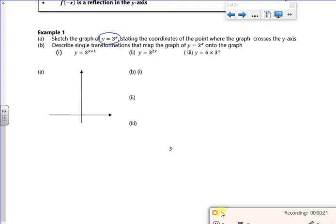Right, so it says sketch the graph of 3 to the x. So we know it's just a power graph, so it's going up. So it crosses at 1, and we've got an asymptote, so y is 0. So nothing new there.